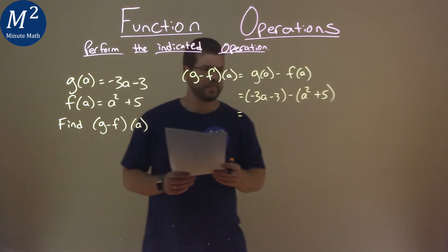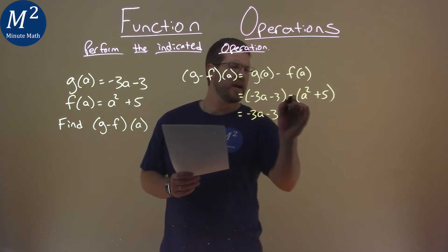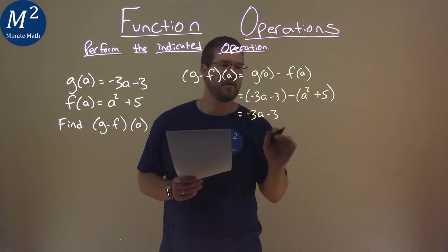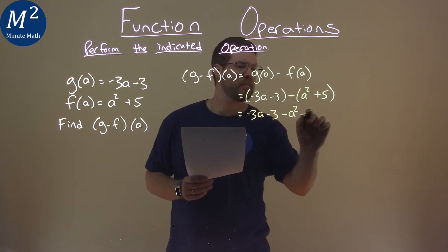So now, let's simplify this. Well, negative 3a minus 3 just comes down. But be careful with this minus sign. Remember, it's to the whole f of a. So we have a minus an a squared here, and then a minus a 5.